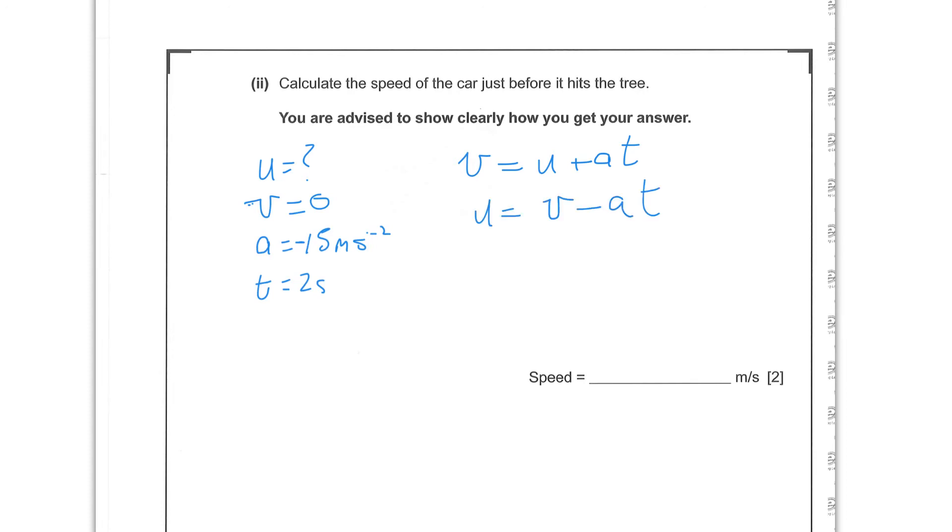And what we need to do now is fill this in. So we've got zero for v. And then we're subtracting negative 15 times 2 for at. And so the minus of minus 15 times 2 is going to be plus 30. And that will be in meters per second.